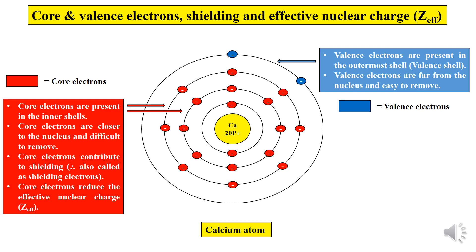Core electrons are those electrons present in the inner shells. They are closer to the nucleus and very difficult to remove because they experience a very strong attractive force towards the positively charged protons in the nucleus. As a result, a large amount of energy is required to remove the core electrons.